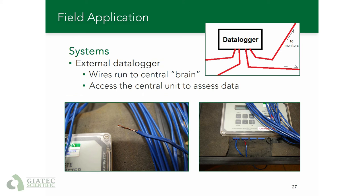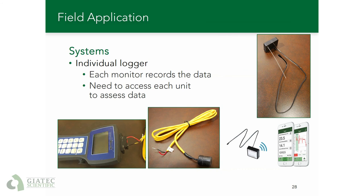There are two primary types of systems used for determining maturity. The first is an external data logger, where wires run into a data logger — that's how the original systems were set up. The unit shown has four different channels, and typically all four channels are used in case any damage occurs to a wire during stripping or reshoring. If the contractor cuts or pulls out a wire, you would lose that channel and lose the data. To ensure redundancy, you can use all four. To access that data you would go to the central unit and either see it on the screen or download it. Another system is an individual logger — more recently it has become easier to integrate all those components into one small unit that can be embedded into the concrete, and each sensor has to be accessed individually to retrieve the data.